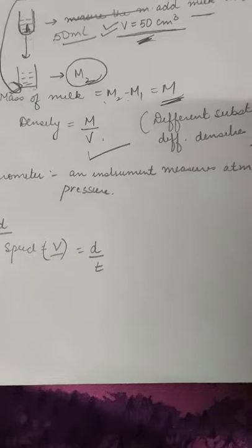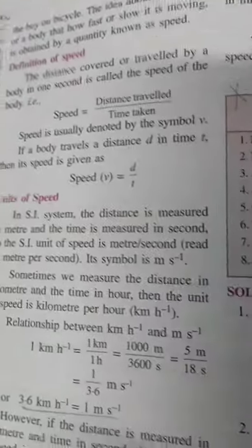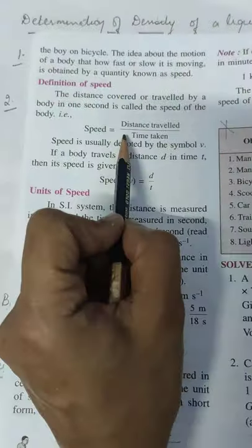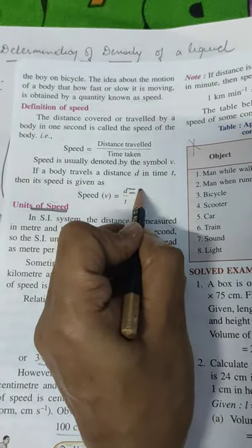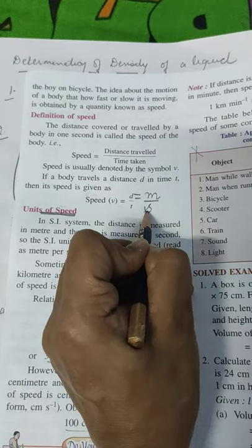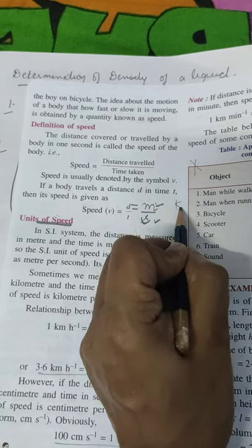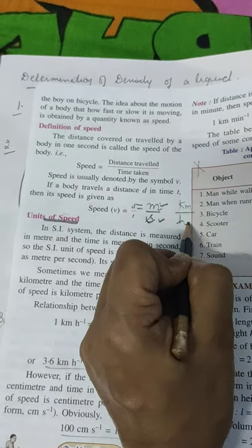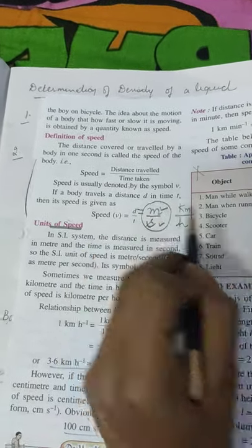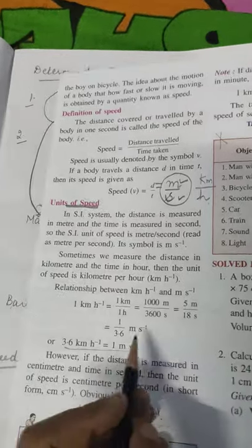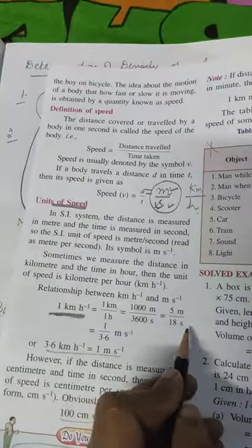Next topic — also very simple — that is speed. Speed is distance upon time. The units of speed: distance is measured in meters and time in seconds, so speed is meter per second. Or if distance is in kilometers and time in hours, that is kilometer per hour. This is the SI unit of speed.